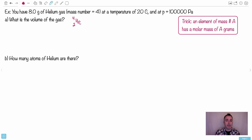It's sitting there at a temperature of 20 degrees Celsius and at a pressure of 100,000 pascals. What's the volume of the gas? Now, of course, we can use the ideal gas equation.